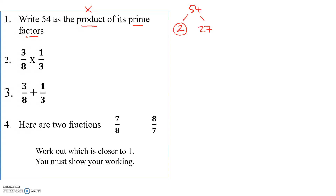Can I divide 27 by two? No, it's not even. Can I divide it by three? Yes. Three times what makes 27? Three times nine makes 27. Is three prime? Yes — let's ring it. Is nine prime? No. What can I divide nine by? Three. Three times what makes nine? Three times three makes nine. Is three prime? Yes. Is three prime? Yes.